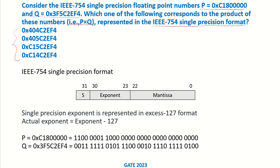If you have seen my earlier video on IEEE 754 single precision format, this format uses 32 bits. The 31st bit corresponds to the sign — 1 for negative and 0 for positive. The next 8 bits from bit 23 to 30 represent the exponent, and the remaining bits represent the mantissa. In single precision, the exponent is represented in excess-127 format.